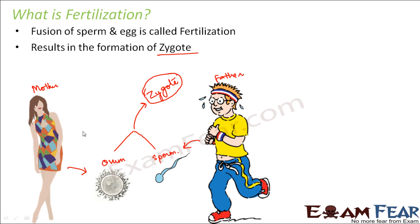In human beings, every cell has a fixed number of chromosomes, which is 46. But ovum and sperm are specialized cells, and that is why they are called sex cells or gametes. They have 23 chromosomes each — ovum has 23 chromosomes and the sperm cell also has 23 chromosomes. So when they combine, they form a cell with 46 chromosomes.